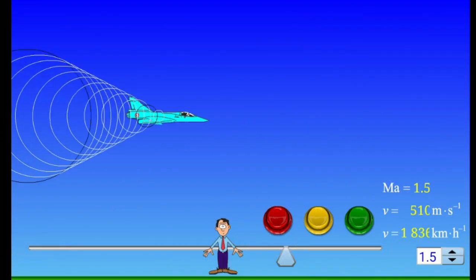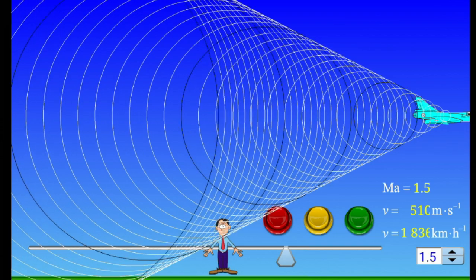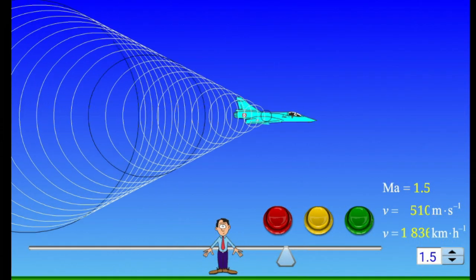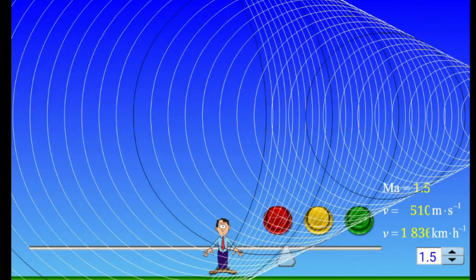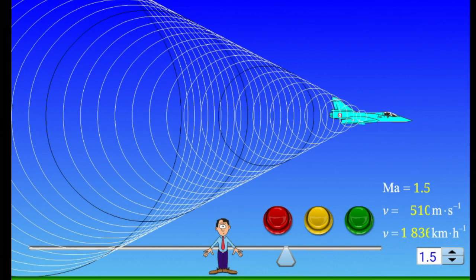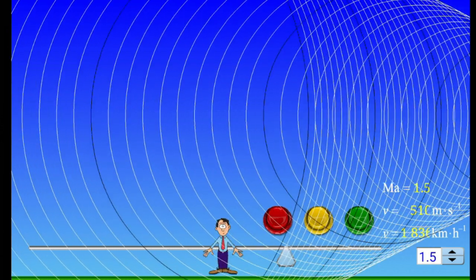When the speed of a source exceeds the speed of sound (v greater than c), the wave fronts lag behind the source in a cone-shaped region with the source at the vertex. The edge of the cone forms a supersonic wave front with an unusually large amplitude called a shock wave.